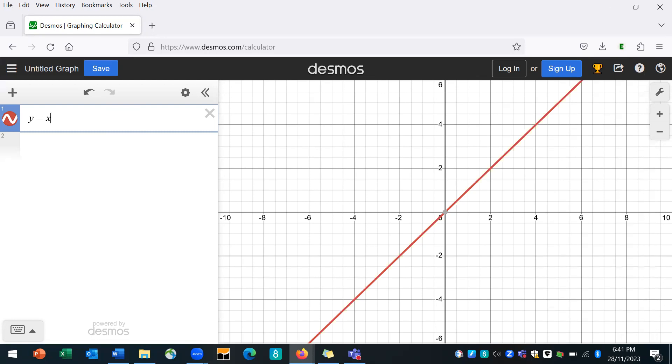So why is that the case? Because when x is 1, y is 1. When x is 2, y is 2. When x is 3, y is 3. When x is 4, y is 4. So that makes sense. The value of y is the same as the value of x.